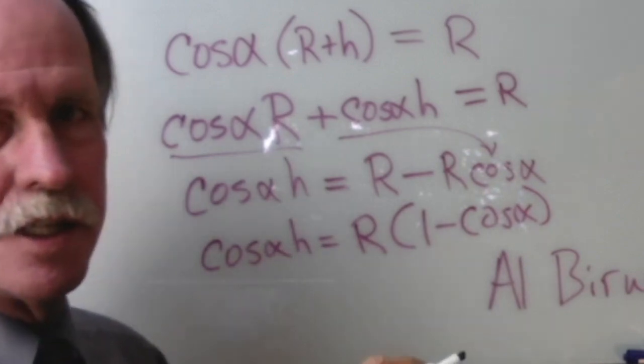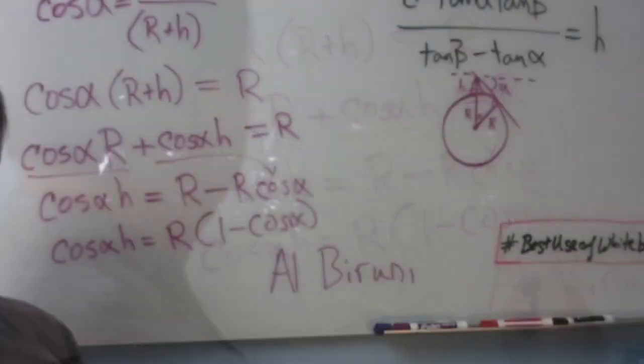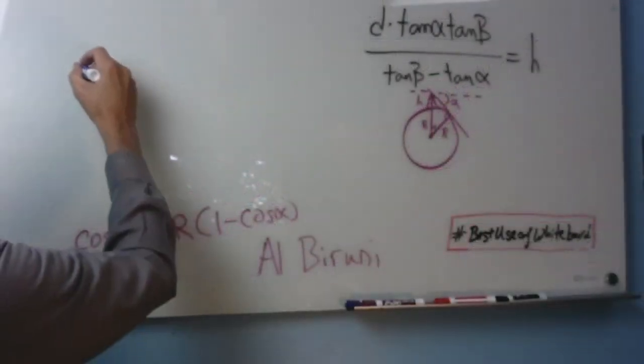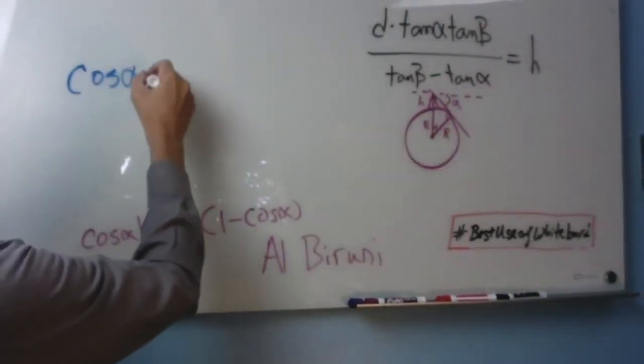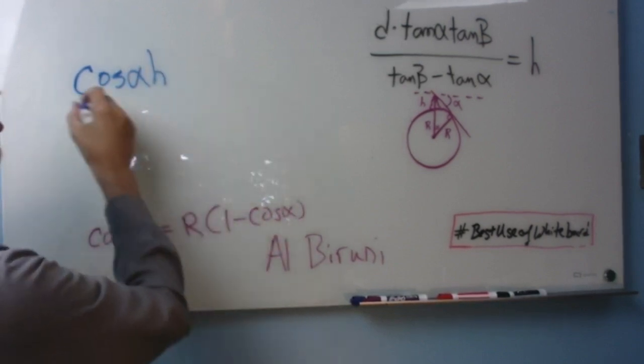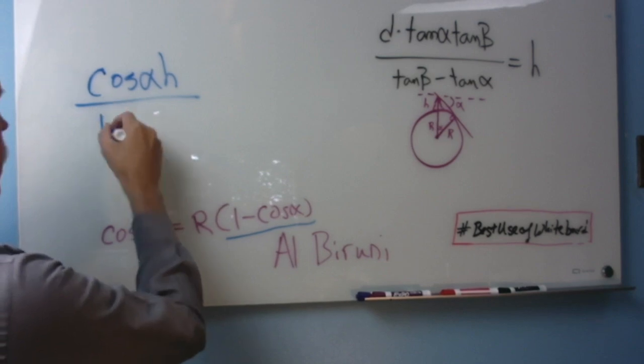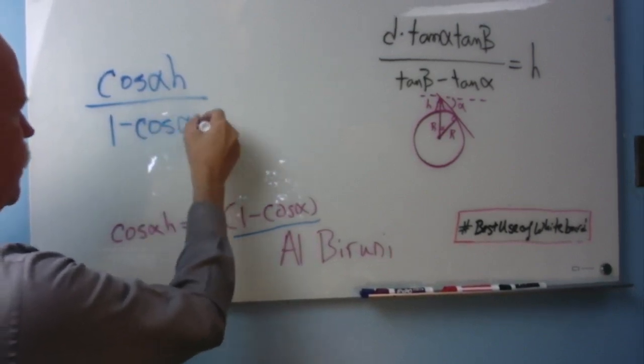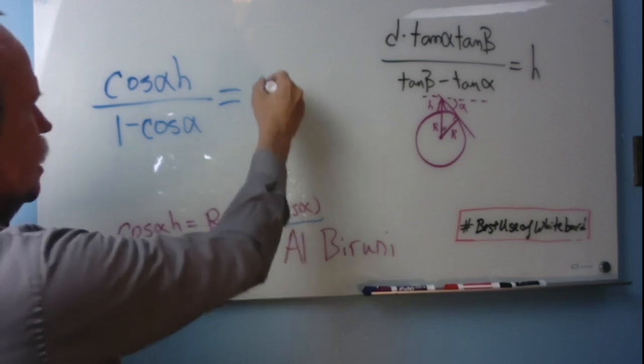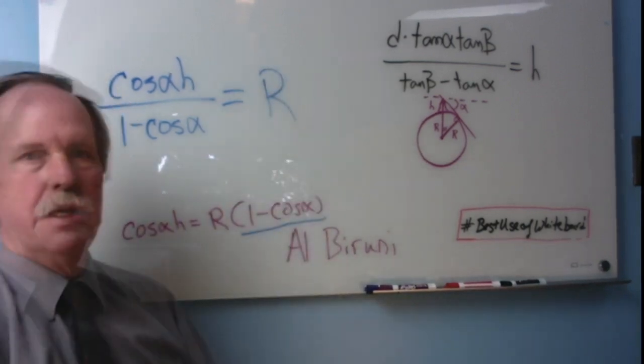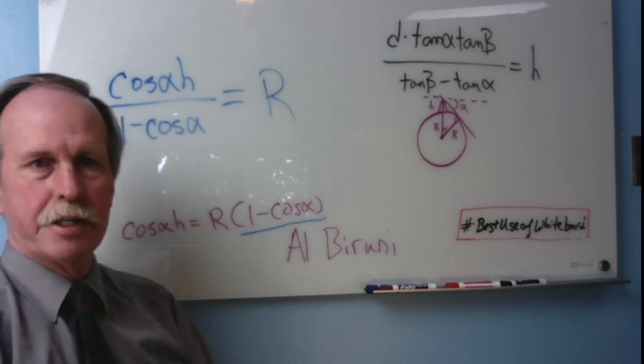The solution to this then will be quite simple. Let's go ahead and write the solution to this together. Cosine alpha h divided by this term right here, one minus cosine alpha, equals r. And that's really all there is to it. It's a very straightforward algebraic expression.